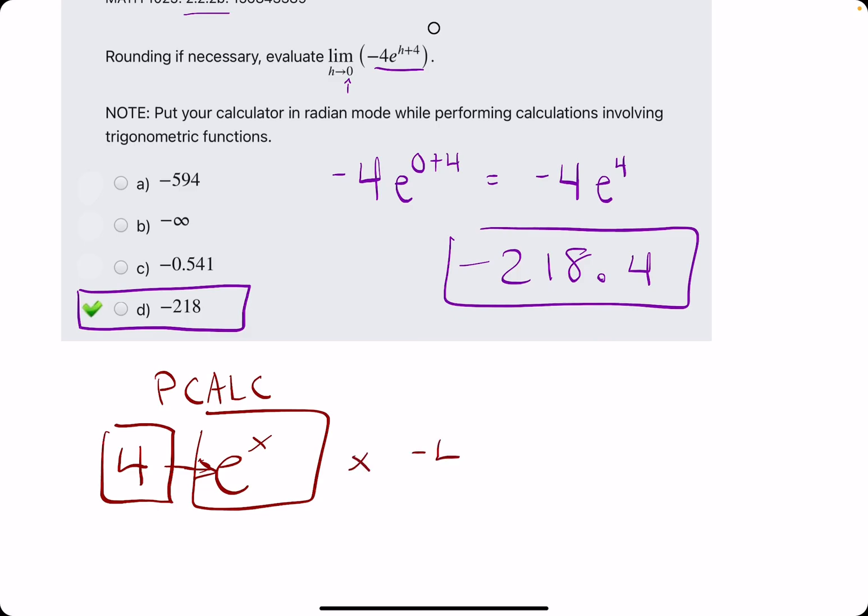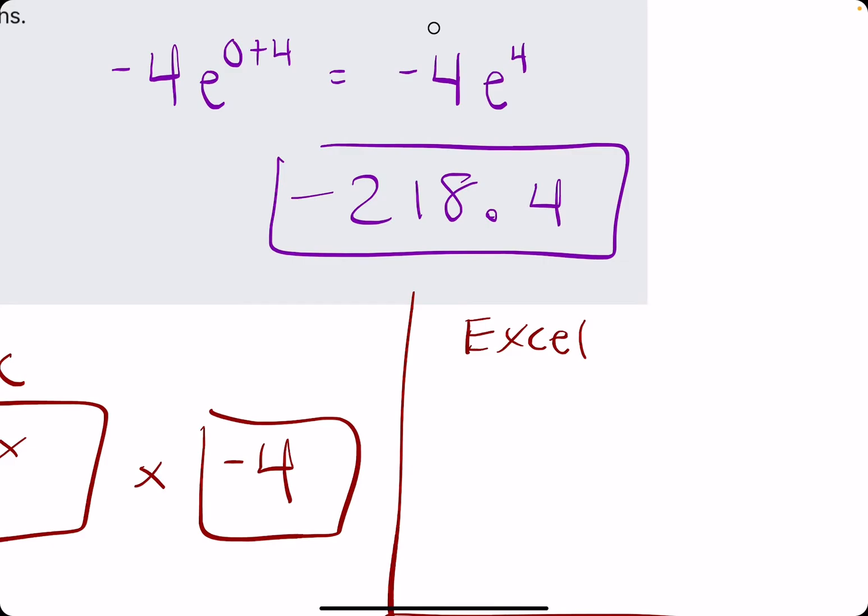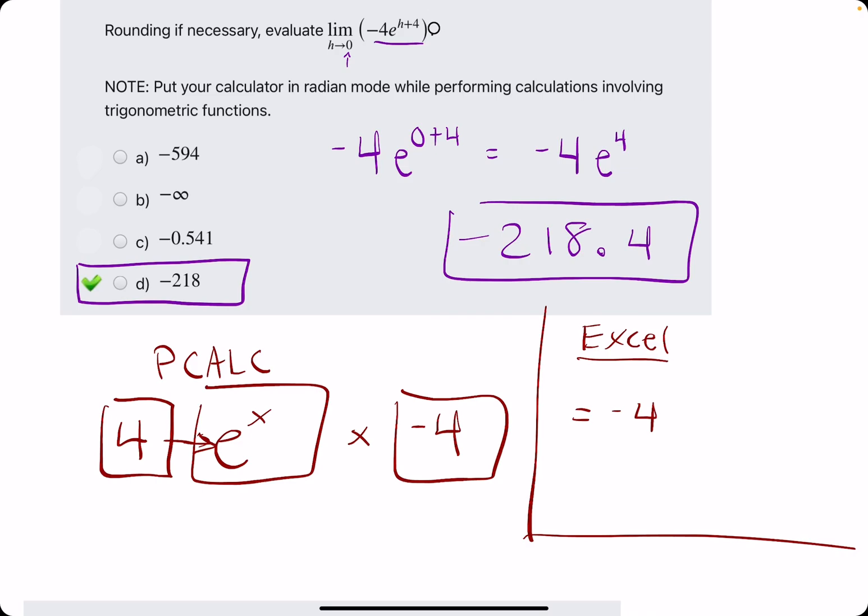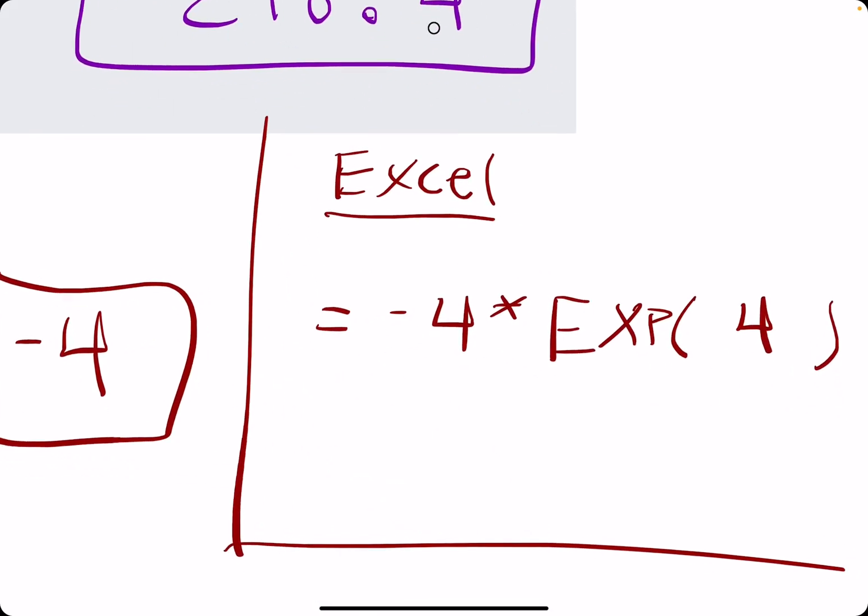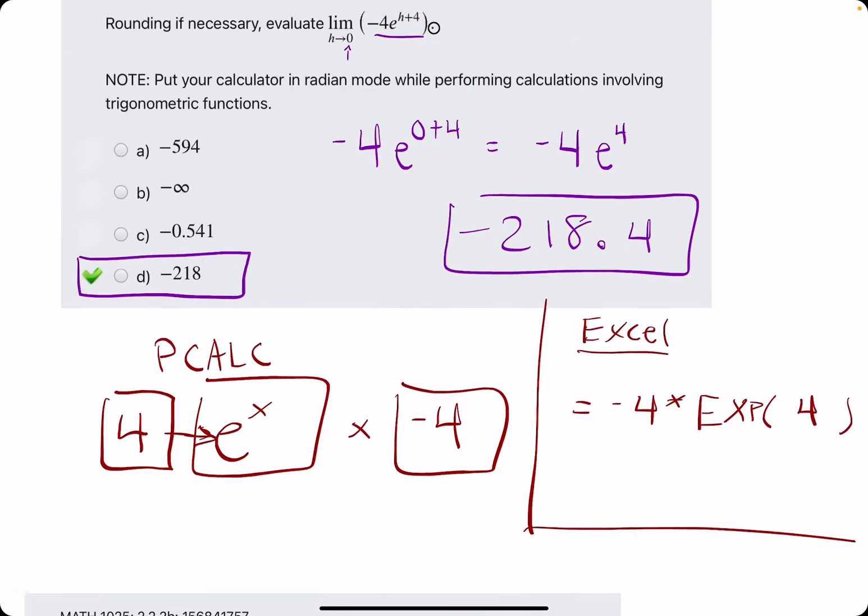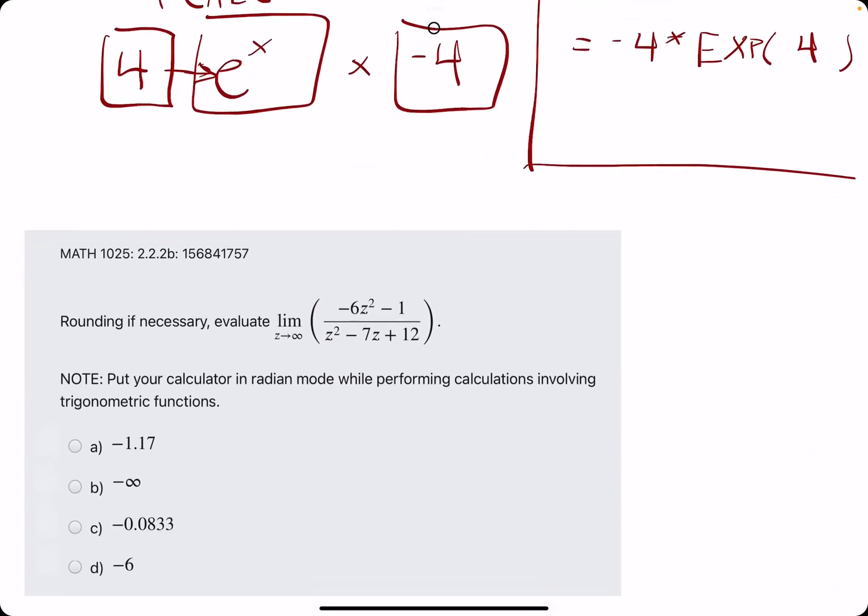And then if you prefer Excel it's just a slightly different function. You'll type in any cell equals minus four times, actually yeah let's go and do times the function is EXP for e to the something, and then that something will go in parentheses. So if you type in negative four times EXP in parentheses four, that should output negative 218. If you have any questions on how to type things in please let me know and I can try to address them.